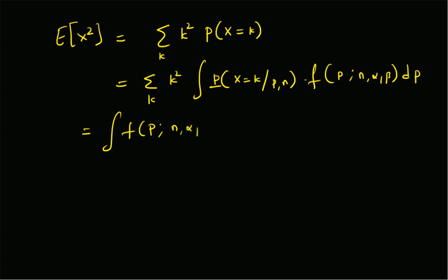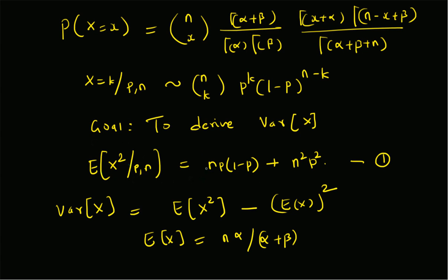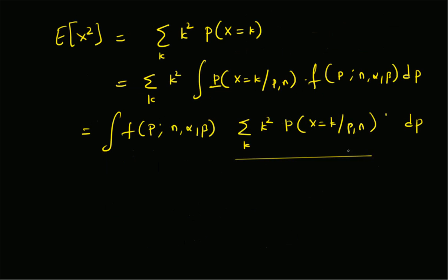Interchanging the summation and integration, we have the integral of f(p; n, α, β) times the summation over k of k² times P(X=k | p, n), dp. We previously established that this conditional second moment of a binomial random variable equals np(1-p) plus n²p².